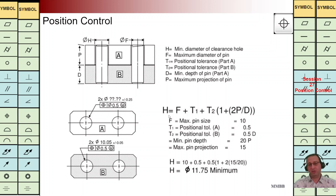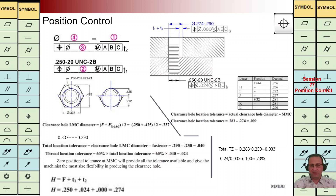We are going to use the extended formula. F — the maximum diameter of the pin — is 10. T1 is 0.5, T2 is 0.5, and P is 15 (maximum pin diameter and pin projection). D is the depth of the pin in part B — let's say it is 20. We calculate the hole diameter for part A: it is 11.75 mm.